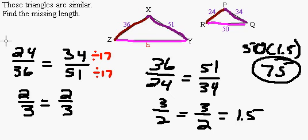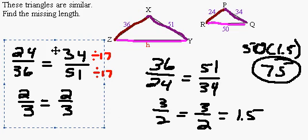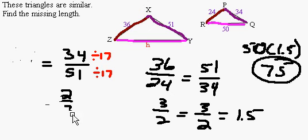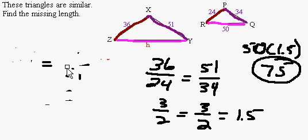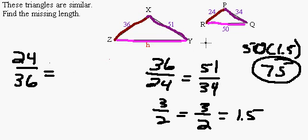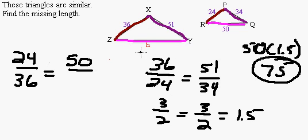Now let me show you another way to do this using an equation and proportions — the idea of a fraction equals a fraction. Using corresponding sides, I'll write 24 is to 36. I want to find H, so I'll use 50 and H. Since 24 is on top and is in the small triangle, I put 50 on top since it's also in the small triangle, and 50 corresponds with H in the large triangle. So we have 24 over 36 equals 50 over H — that's our proportion.